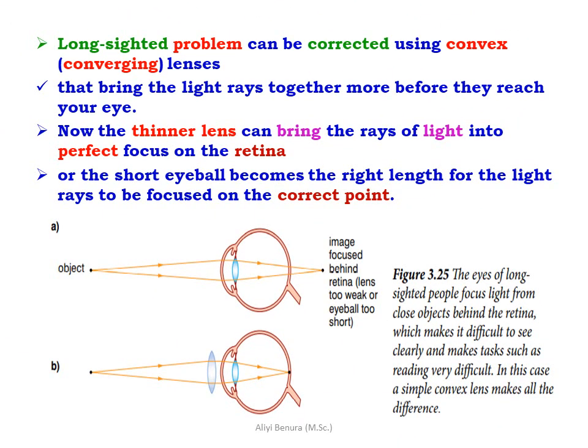Long-sightedness can be corrected using convex or converging lenses that bring the light rays together before they reach the eye. The thinner lens can bring rays of light into perfect focus on the retina, and the short eyeball becomes the right length for light to focus on the correct points.